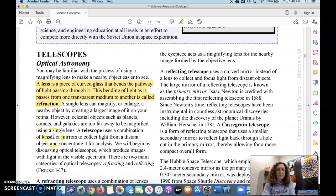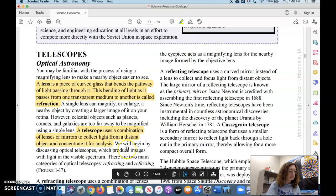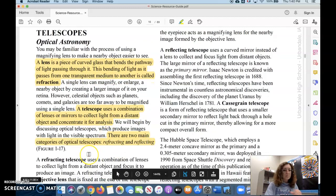A telescope uses a combination of lenses or mirrors to collect light from a distant object. In fact, there are two kinds of main optical telescopes, refracting and reflecting.